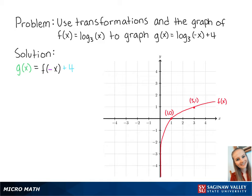g of x equals f of negative x plus 4. The negative x means that we reflect the graph over the y-axis.